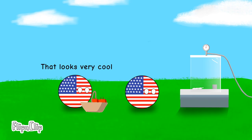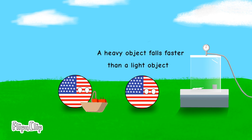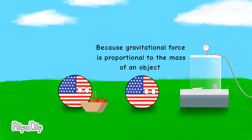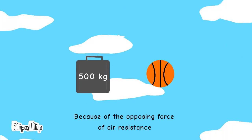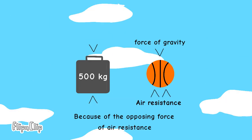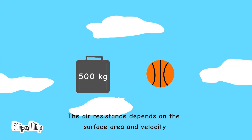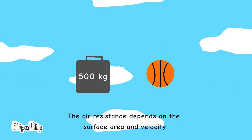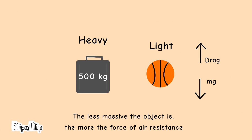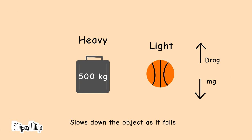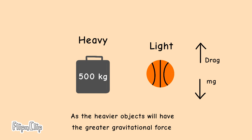That looks very cool. A heavy object falls faster than a light object because gravitational force is proportional to the mass of an object. However, lighter objects fall slower because of the opposing force of air resistance. The air resistance depends on the surface area and velocity. The less massive the object is, the more the force of air resistance slows it down as it falls.